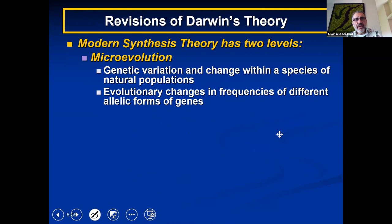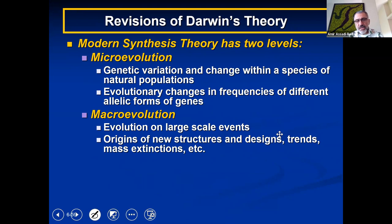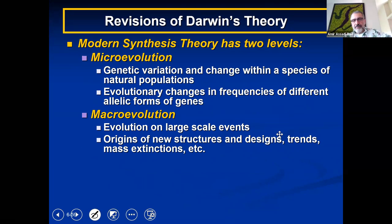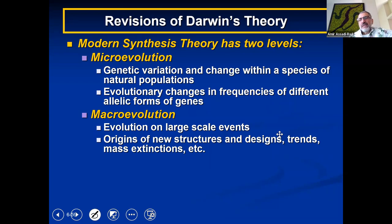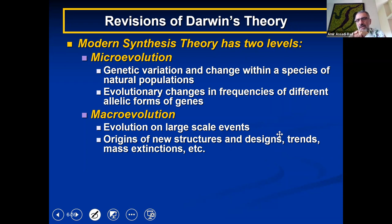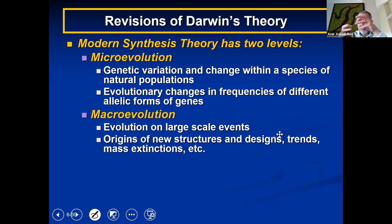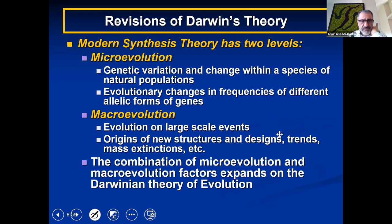Coming to the end — microevolution is genetic variation and changes at a small scale. Macroevolution is evolution on a large scale. Macroevolution means extinction — if you have big changes all of a sudden, not gradualism, that is macroevolution. Everything I talked about — mutation, genetic drift, etc. — are microevolution. Over a period of time, microevolution becomes big, but macroevolution involves extinction — many die, and then new species quickly flourish. The origin of new structures, designs, trends, and masses — the combination of micro and macroevolution — all depends on Darwin's theory of evolution.